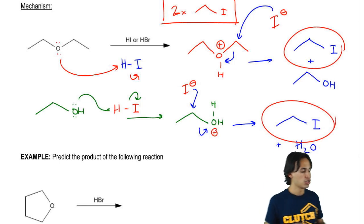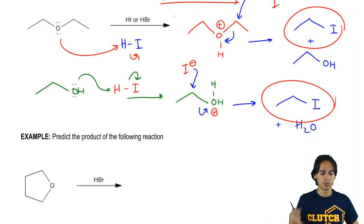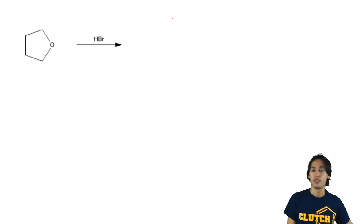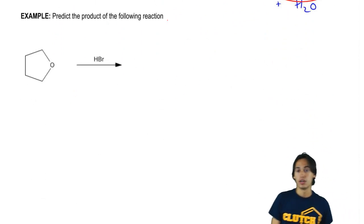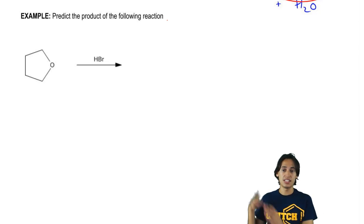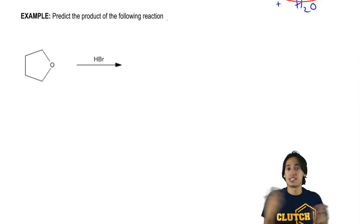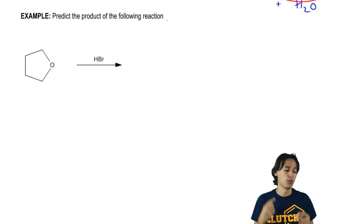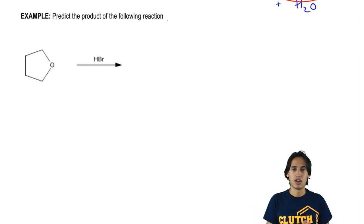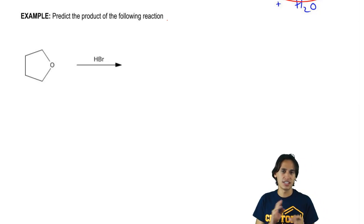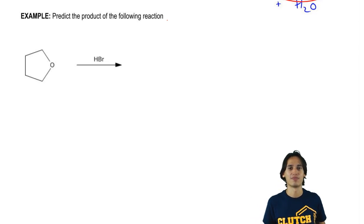I hope that made sense. So now what I want you guys to do is predict the whole mechanism for this cyclic ether. Now this is a cyclic ether, but it's not technically an epoxide because remember epoxides are three-membered ring. This is a five-membered ring. So we would just call this a cyclic ether. And I want you guys to use HBr to figure out what the end product is going to be. This is going to react twice just like the other reaction. So try your hardest to get this and then I'll show you guys the way.